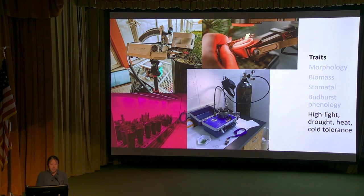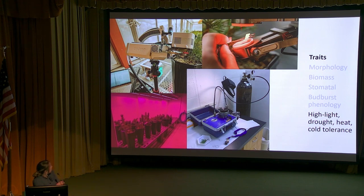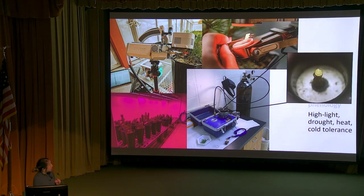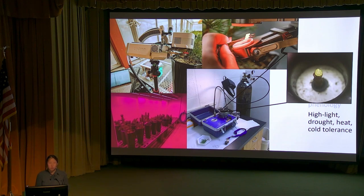Our final measurements were stress resistance - those slow conservative traits: tolerance to cold, heat, drought, and light. We used a variety of methods including a portable photosynthesis instrument to measure the effect of stressors on photosynthesis and cellular damage. We also used a pressure chamber to measure drought tolerance by assessing water status in cut stems. And we exposed seedlings to cold treatments to measure cold tolerance.